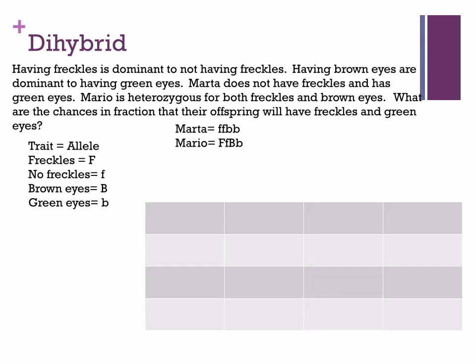Using FOIL for Marta: F is the first of each type of letter, O is the outer letters, I is the inside letters, and L is the last of each type. For Mario, same approach — first, outer, inner, and last of each type of letter using FOIL or a small Punnett square. Then fill it in.